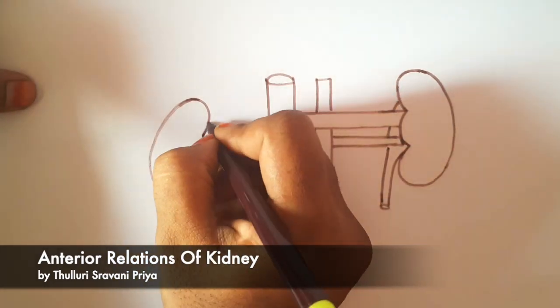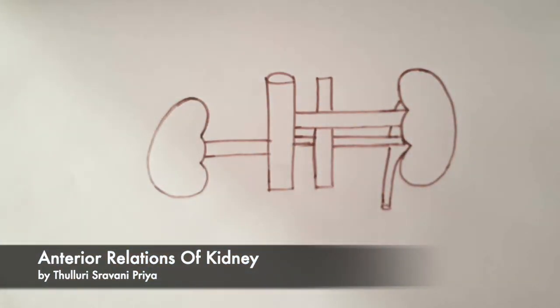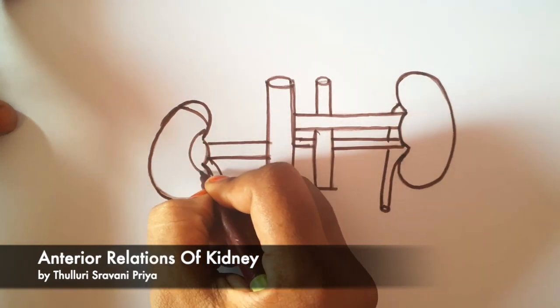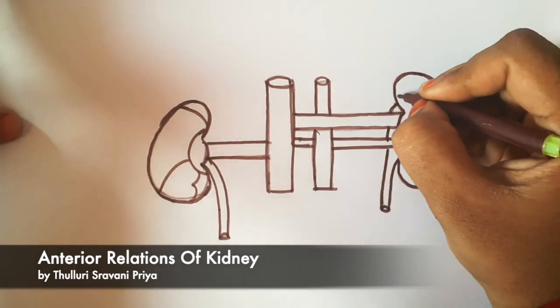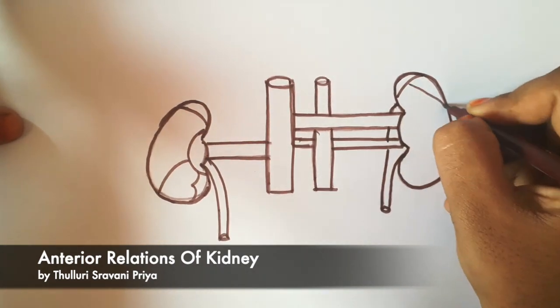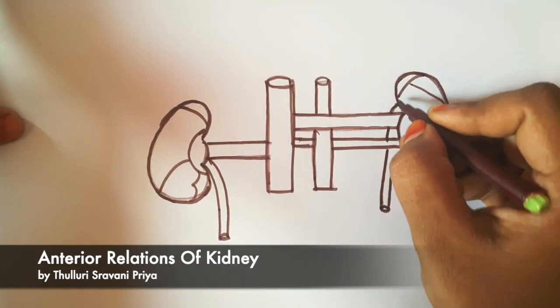That is the right kidney. Now we will see the impressions on the right kidney. That is the suprarenal area and this is the second part duodenum. This is the hepatic flexure of colon with its jejunum and hepatic areas.